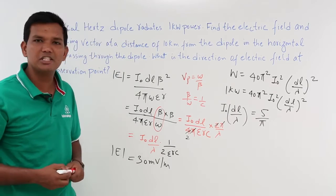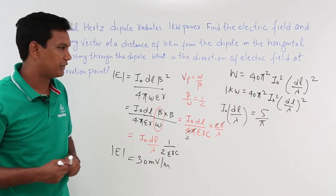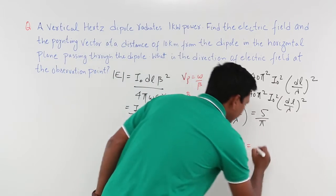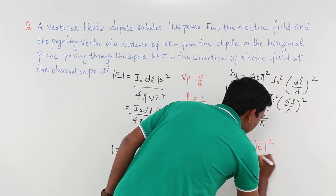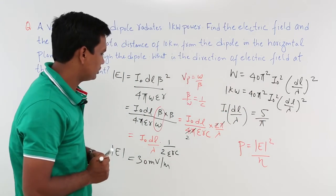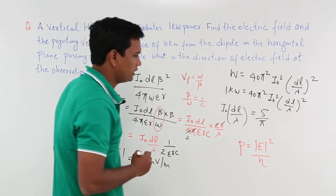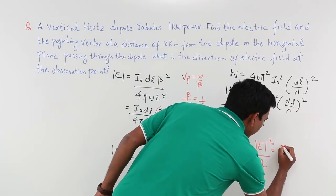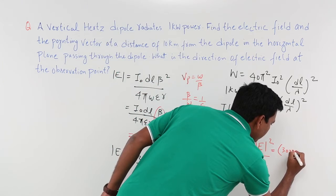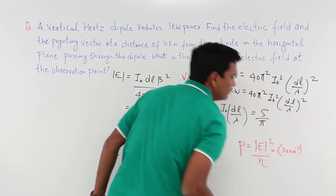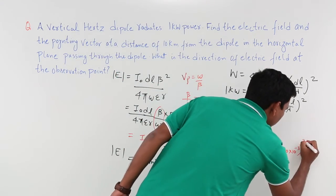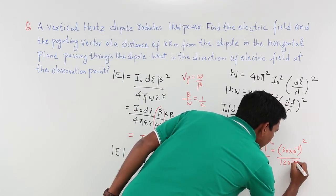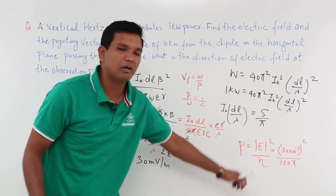Once I got the electric field the next part is finding the pointing vector. That would be given by P would be given by |E|²/η. And you can substitute what is E²? It comes out to be nothing but (30 × 10⁻³)² divided by η. What is η? η is nothing but 120π. You can simplify that and you can get the power also.